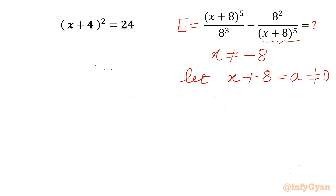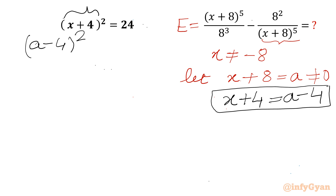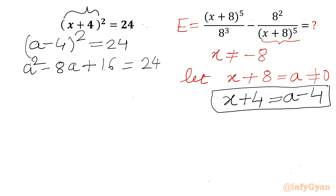Now I will calculate x plus 4 in terms of a, as it is required. So x plus 4 will be a minus 4. Applying this: a minus 4 whole square equal to 24, so a squared minus 8a plus 16 equal to 24, giving a squared minus 8a equal to 8.